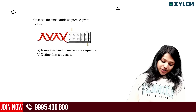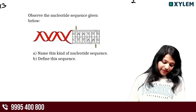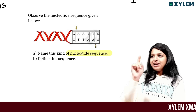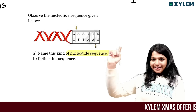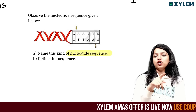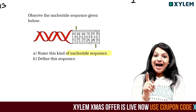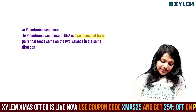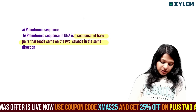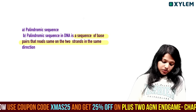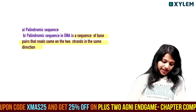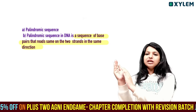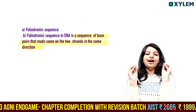Observe the nucleotide sequence given below: G-A-A-T-T-C. Name the kind of sequence. That is a palindromic sequence. It is a sequence of base pairs that reads the same on both strands in the same order.